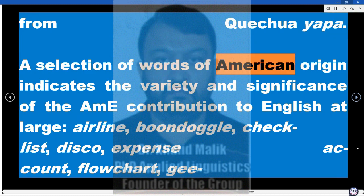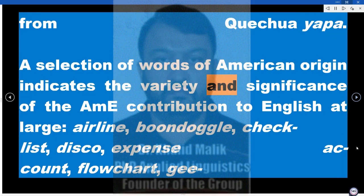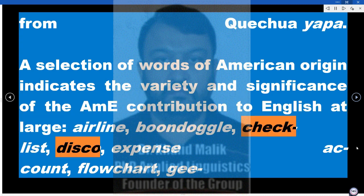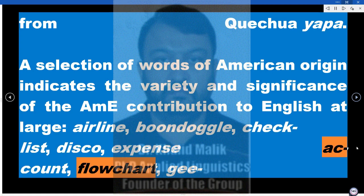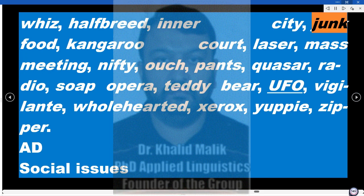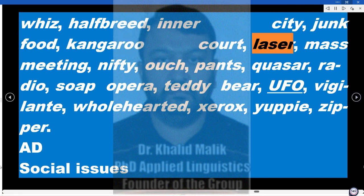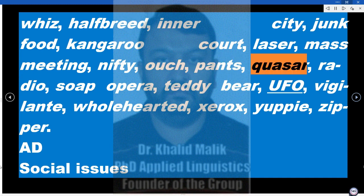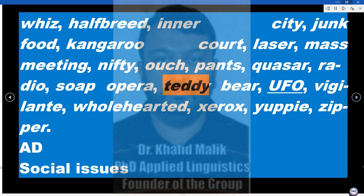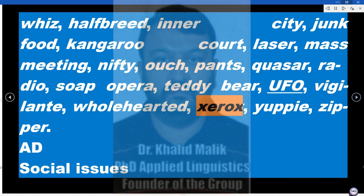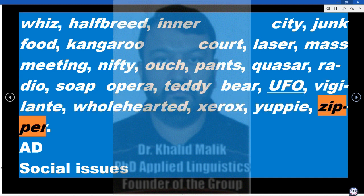A selection of words of American origin indicates the variety and significance of the AME contribution to English at large: airline, boondoggle, checklist, disco, expense account, flowchart, gee whiz, half-breed, inner city, junk food, kangaroo court, laser, mass meeting, nifty, ouch, pants, quasar, radio, soap opera, teddy bear, UFO, vigilante, whole-hearted, xerox, yuppie, zipper.